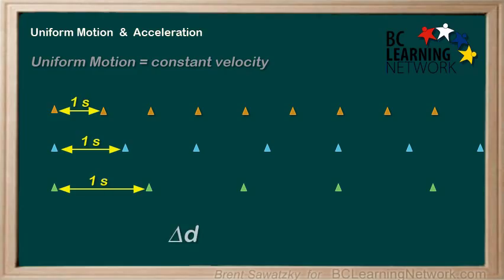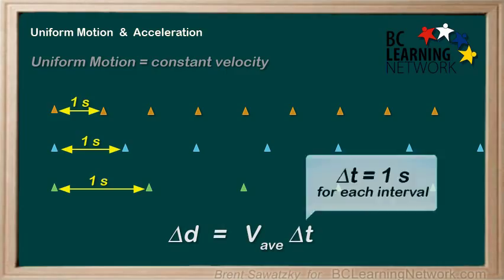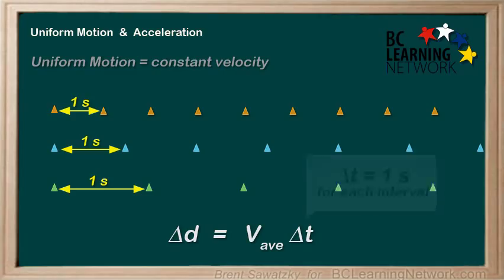Since we know that the change in displacement is the average velocity times the change in time, and that the change in time for each of these is one second, it must mean that the average velocity is different for each truck. Certainly the orange truck would have the lowest average velocity, and the green truck would have the greatest average velocity.